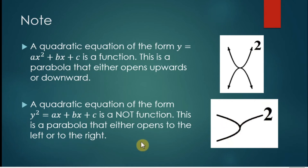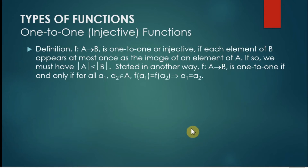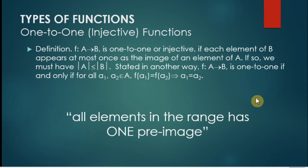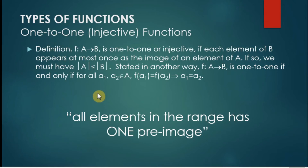Let us proceed to the different types of functions. There are three types. The first type is called one-to-one functions. A function is one-to-one if all elements in the range have exactly one pre-image. To check a mapping, we concentrate on the range: every element in the range should have only one pre-image. If any element has more than one pre-image, then the function is not one-to-one.